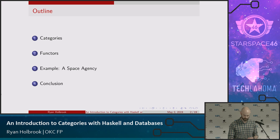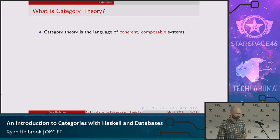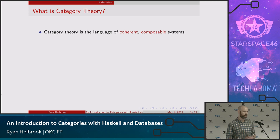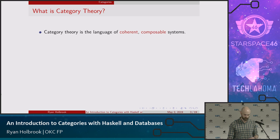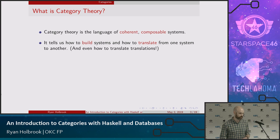What is category theory? You could think of it as the language of coherent, composable systems. Those two words — coherent and composable — are the two themes for today. Category theory tries to answer the question: if you have a bunch of pieces that you want to assemble into a larger part, how can you do that in a way that isn't going to make your system break? It tells us how to build systems and how to translate those systems from one to another using functors.